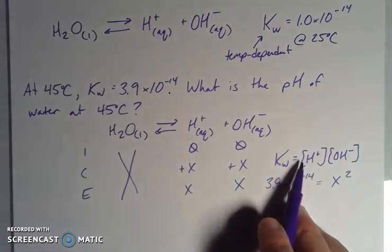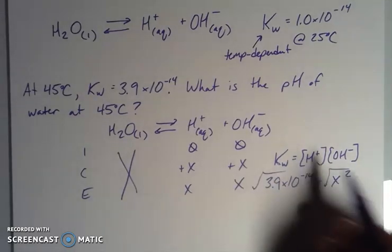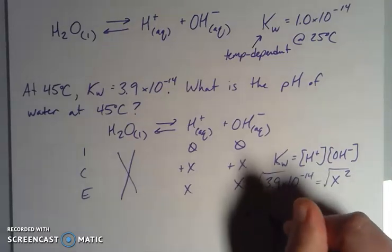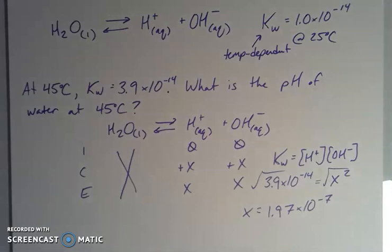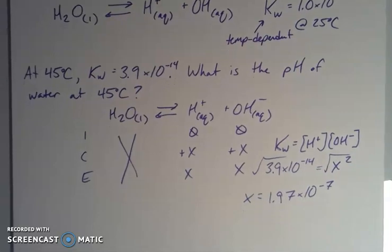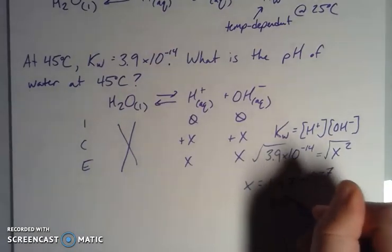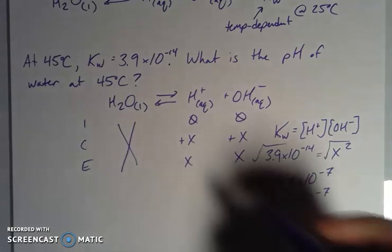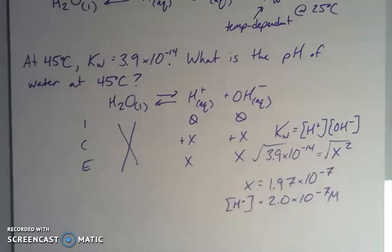So it tells me that at 45 degrees, it's 3.9 times 10 to the negative 14th. And that is equal to X squared. So X times X here. X is my concentration of hydrogen. X is my concentration of hydroxide. So when I take the square root of each of these, then I end up with my X is equal to 1.97 times 10 to the negative 7th. If I'm thinking about significant figures, I'd like to round them before I end up going to my logarithm. So I'm going to round up here to 2.0 times 10 to the negative 7th here for my concentrations. So what I just solved for is the concentration of my hydrogen ions.